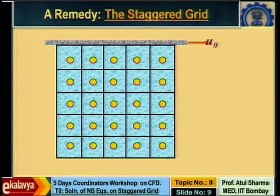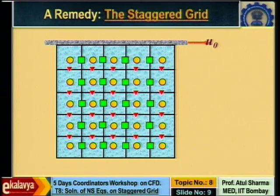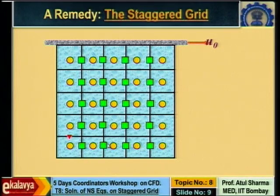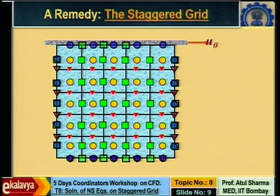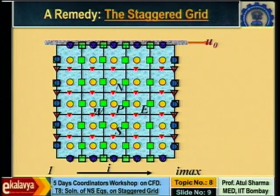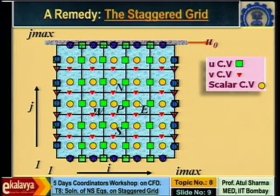On the staggered grid: the circle is the grid point for pressure, the green square is for u velocity, and the red inverted triangle is for v velocity. Inside the domain, green squares are 4 in x and 5 in y direction; red inverted triangles are 5 in x and 4 in y. There are also boundary points for pressure, u velocity, and v velocity on the walls. The circle is not only the grid point for pressure but also for temperature, which is why it is called the scalar control volume.